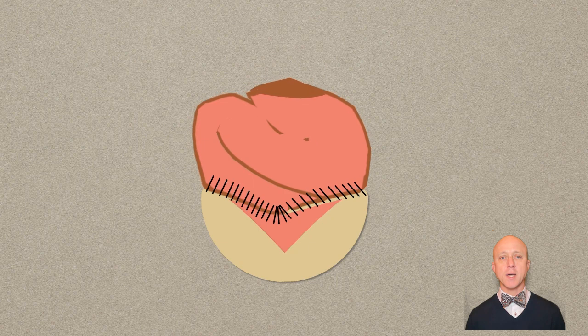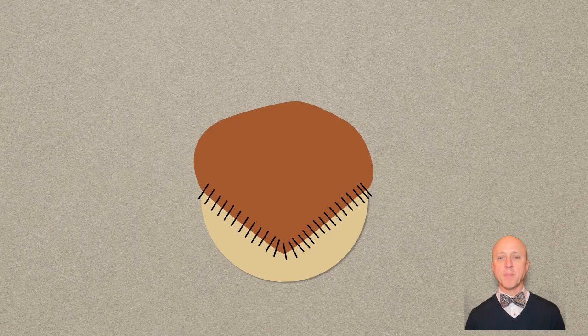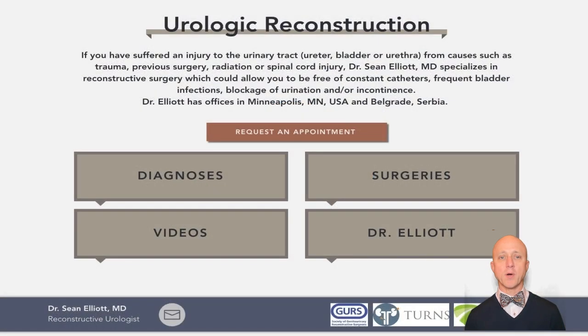This is first done on the back wall and then on the front wall. When this is complete, we have a bladder that can hold about 6 hours of urine and store it at very low pressures, fixing the incontinence problems, bladder spasm problems, and kidney problems that are typical of neurogenic bladder.